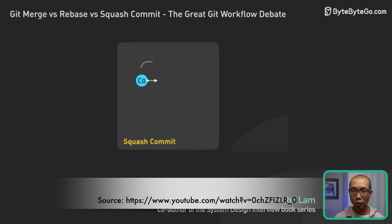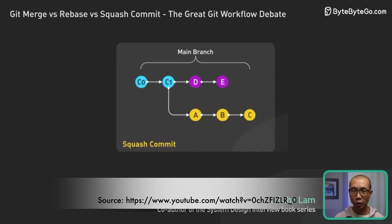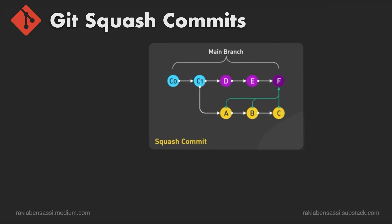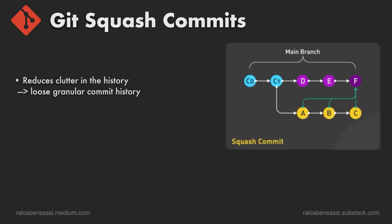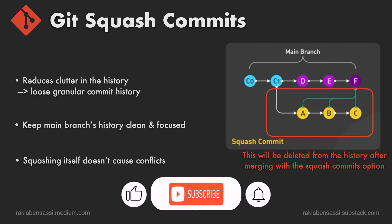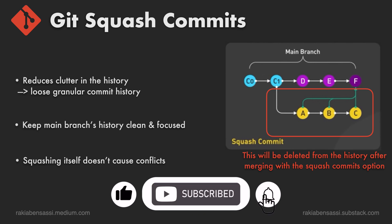Git squash commits combines multiple commits into a single commit, often done during a merge request to simplify the commit history. It reduces clutter by consolidating many small commits into one, but leads to losing granular commit history. Usage in teams: it helps keep the main branch's history clean and focused, showing only meaningful consolidated changes. Squashing itself doesn't cause conflicts, but resolving conflicts before squashing is necessary.